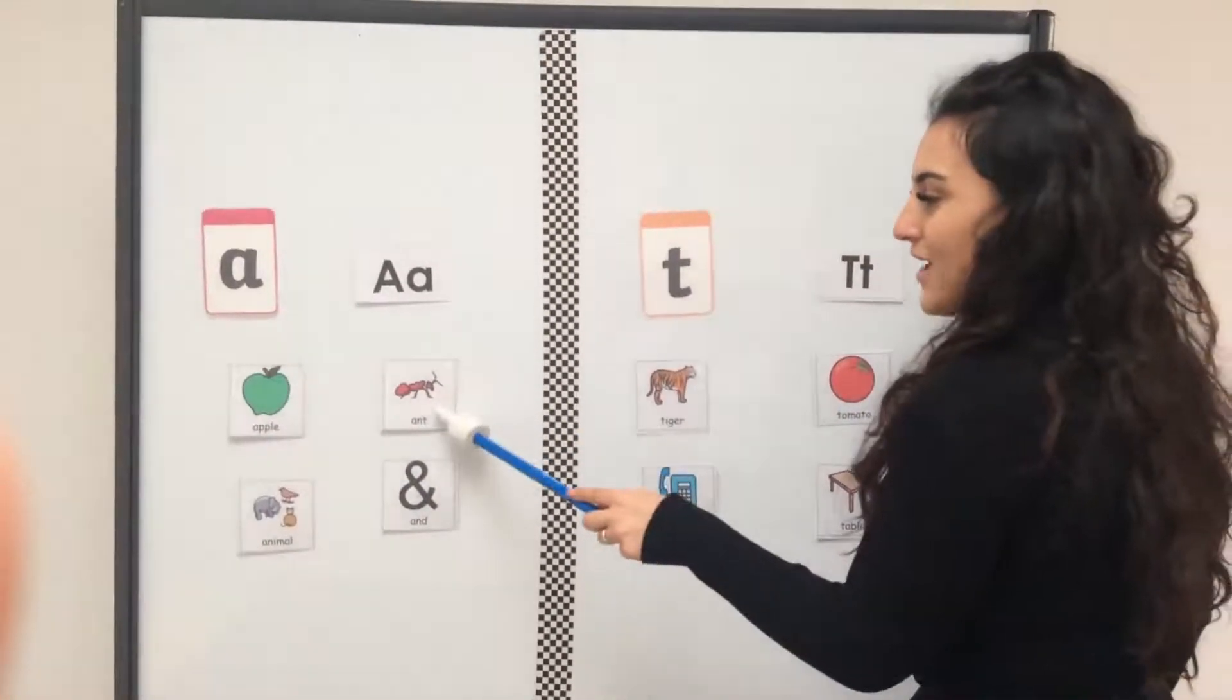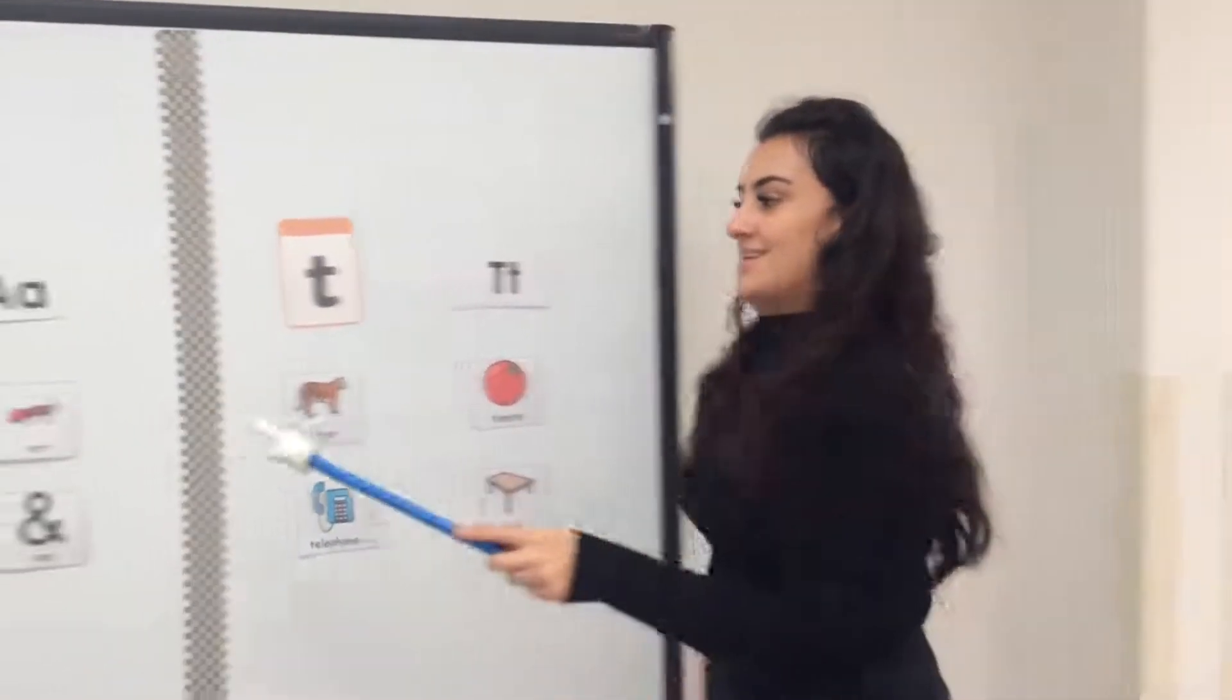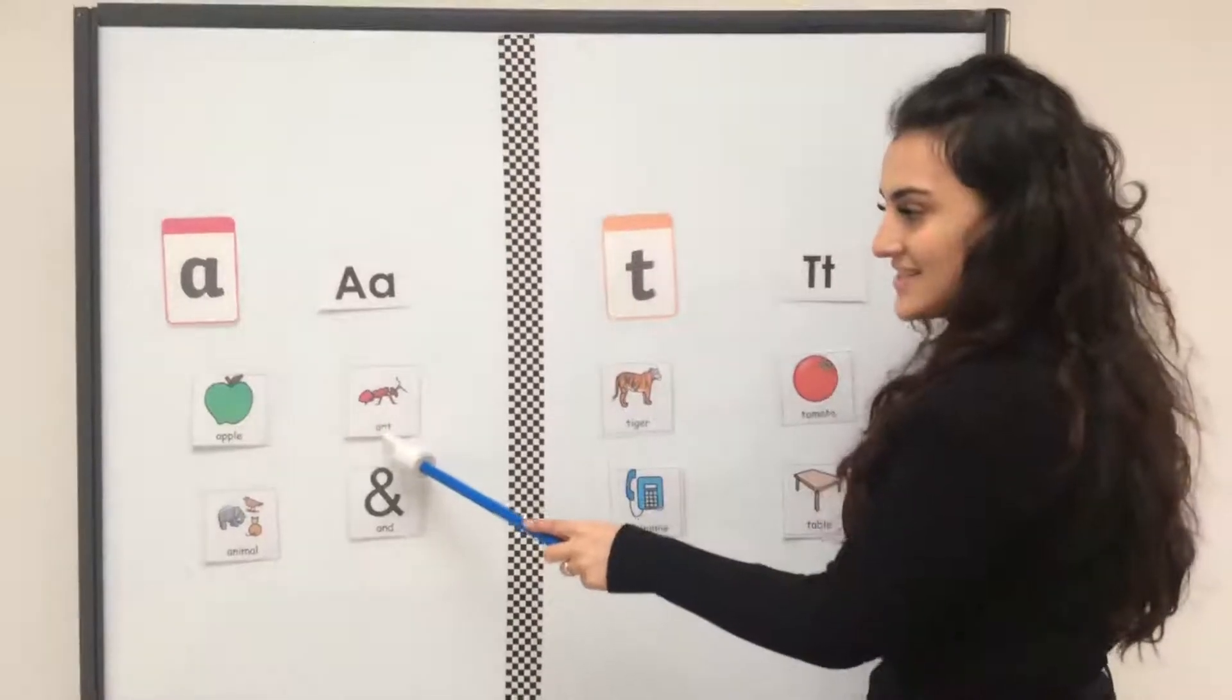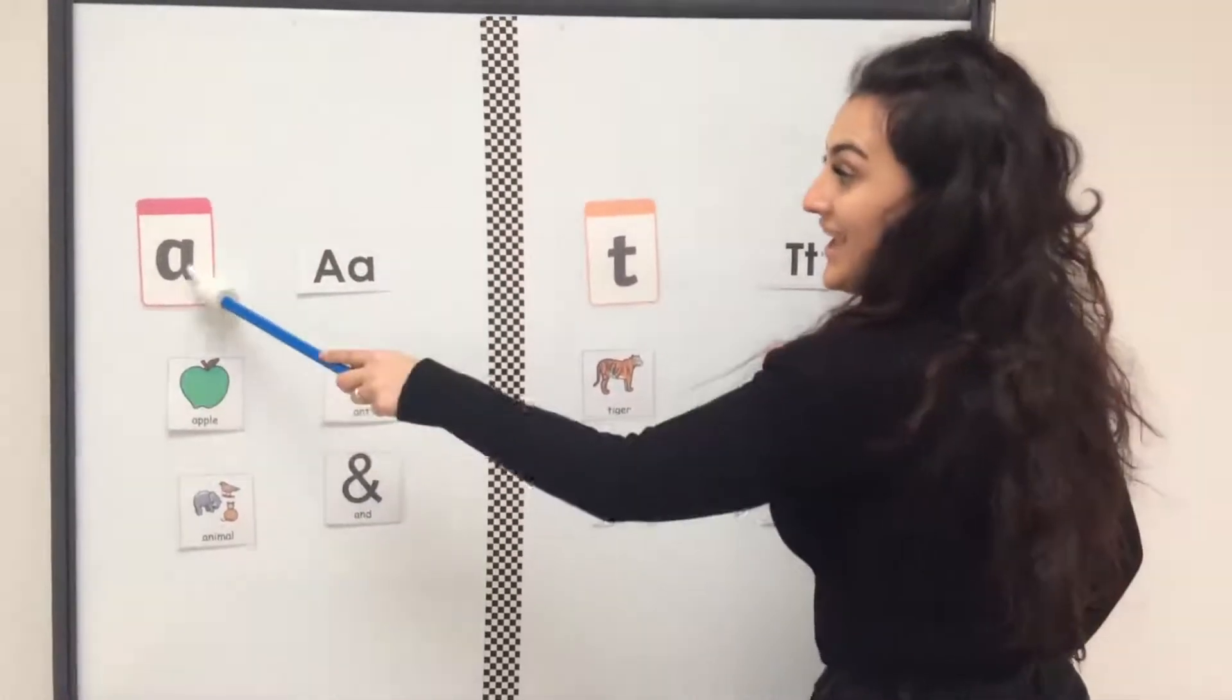I've got A for ant. I've got the picture and the word for ant. Ant begins with the letter A.